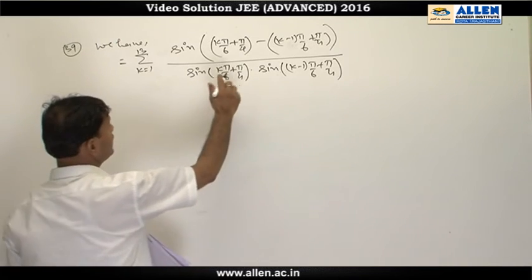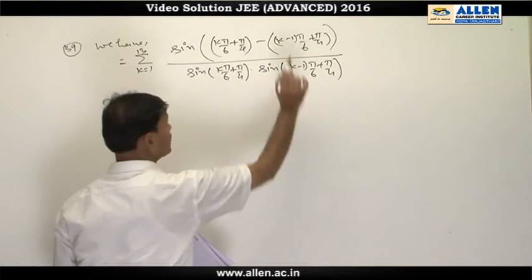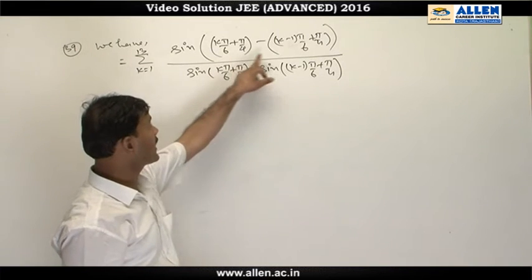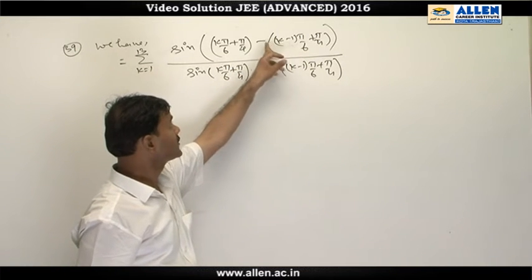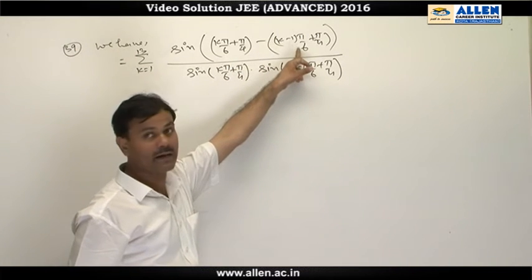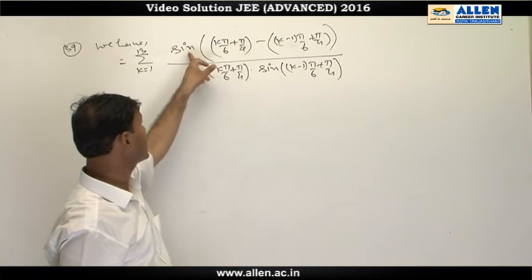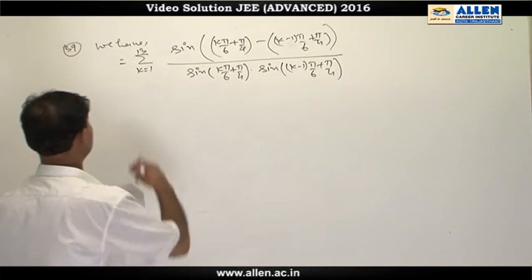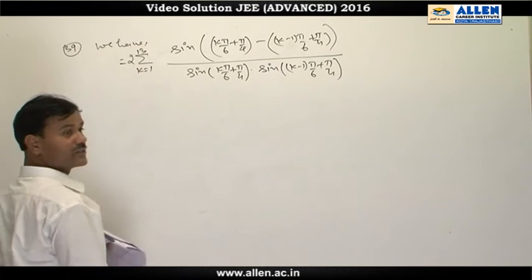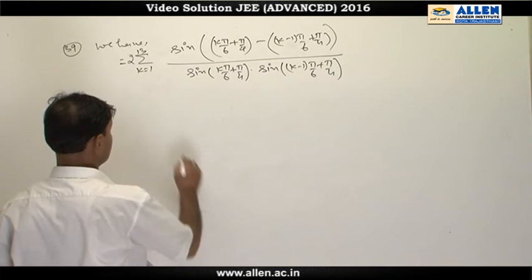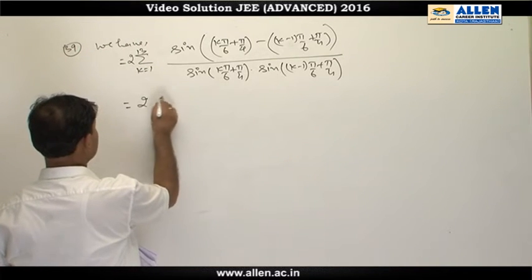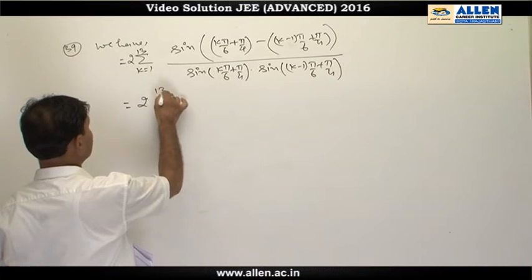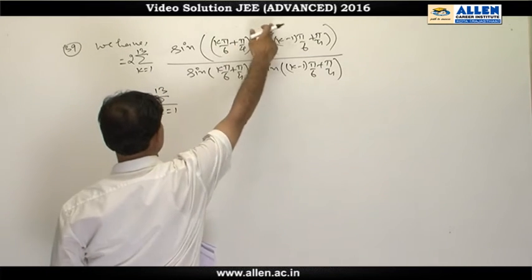Now π/4 cancels with π/4, and k·π/6 cancels with k·π/6, so we are left with π/6. We know sin(π/6) = 1/2, so we can multiply by 2 — the result will not change. This becomes 2 times the summation for k from 1 to 13.